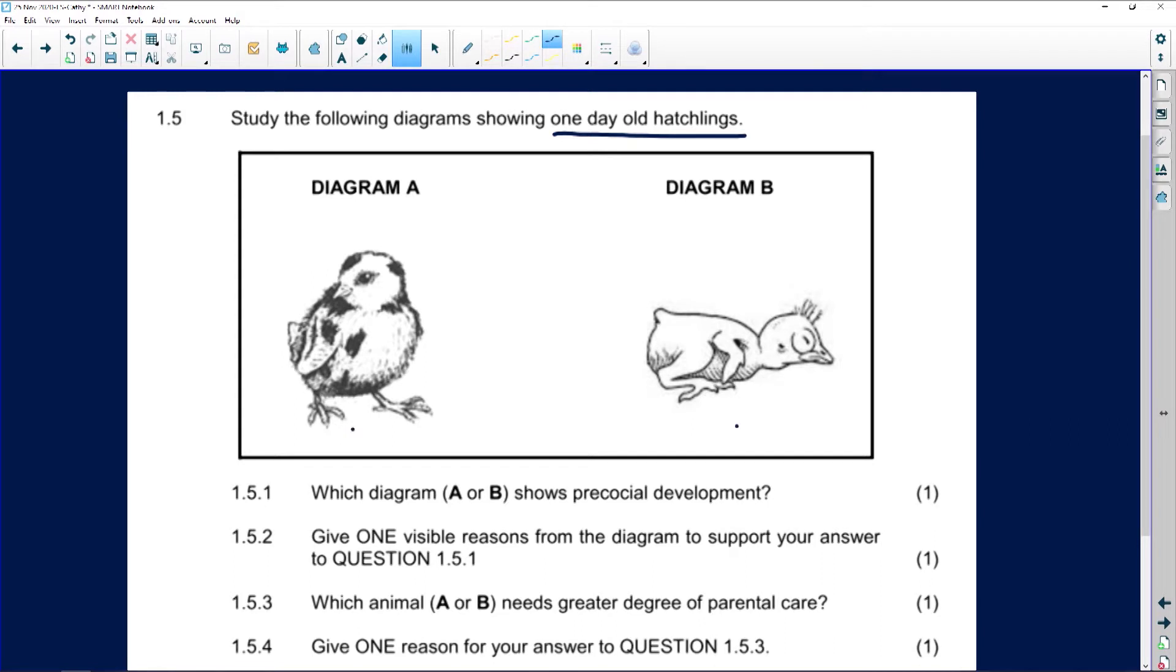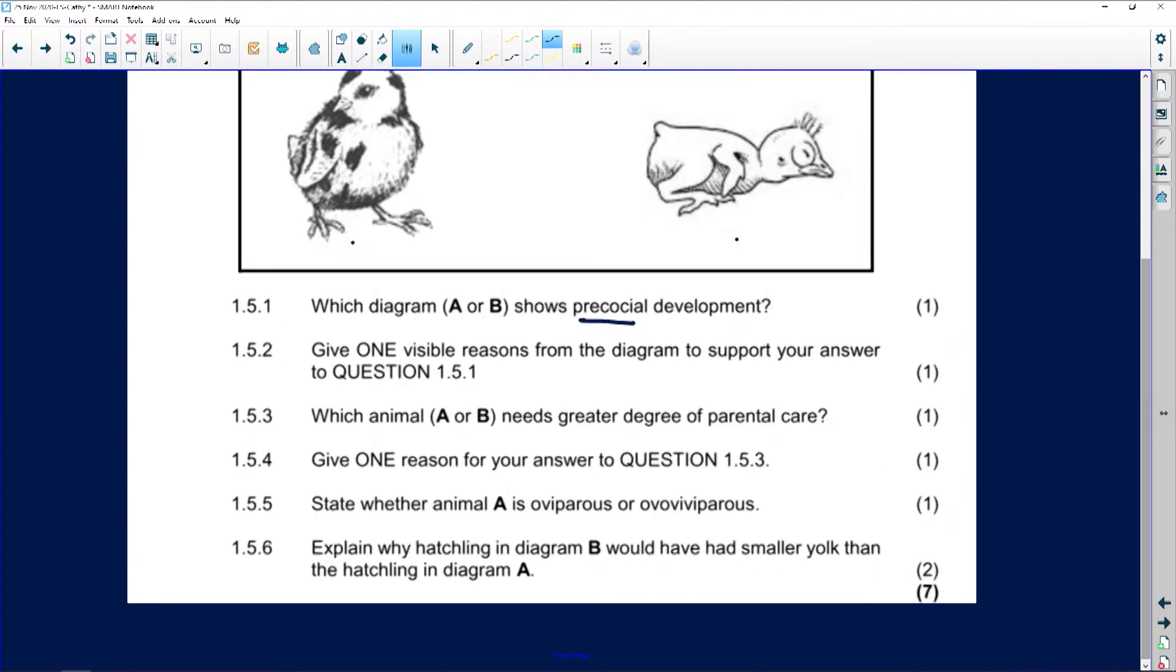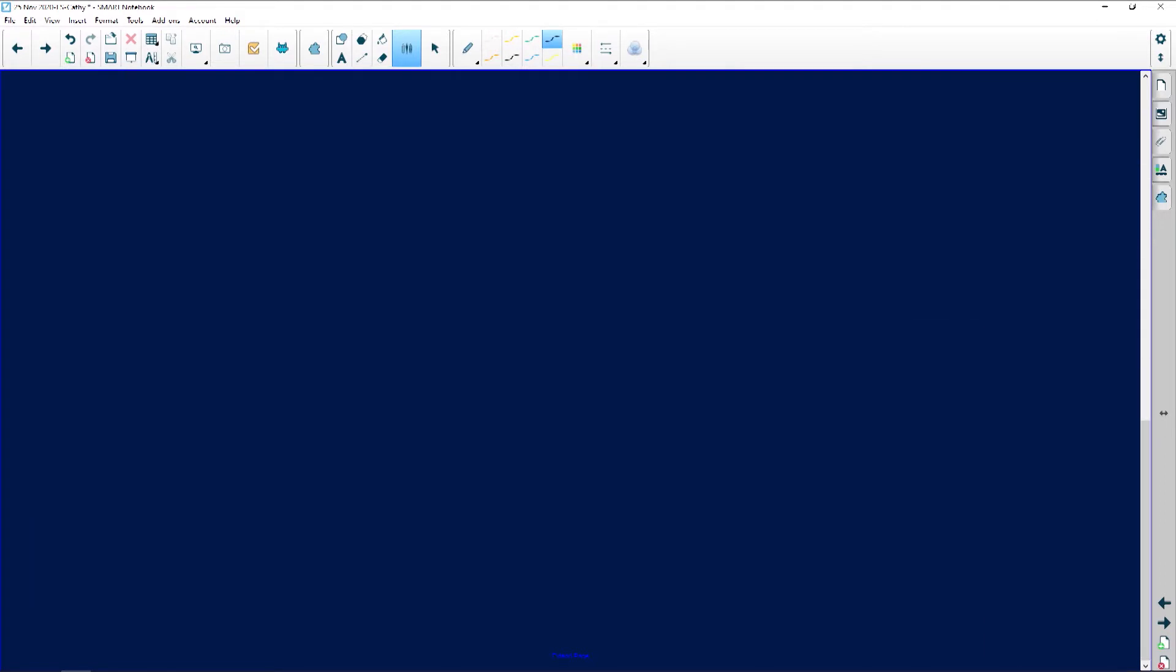There's diagram A and there's diagram B, and it says which diagram shows precocial development. Now the way to remember it is like this. I'm going to go through this because if you listen now, you won't ever have to sit and swat it. You will know it, you will remember it, and you will get the 10 marks in the exam.